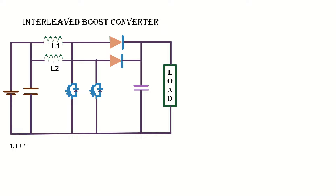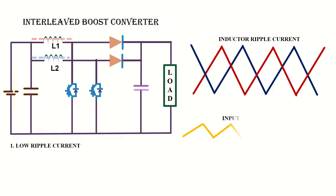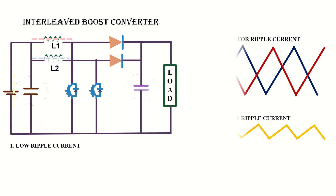The first advantage is that the ripple current in the input and output stage is reduced. If these are the ripples in each inductor current, then the input ripple will be much lower than the inductor ripple, and therefore the input and output capacitor values can be minimized.